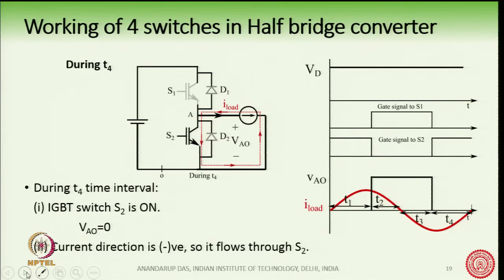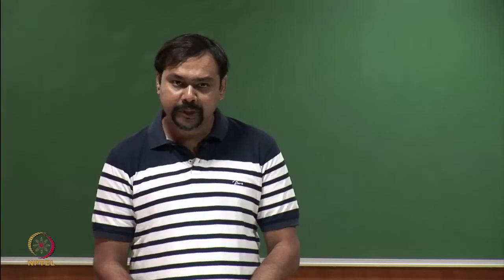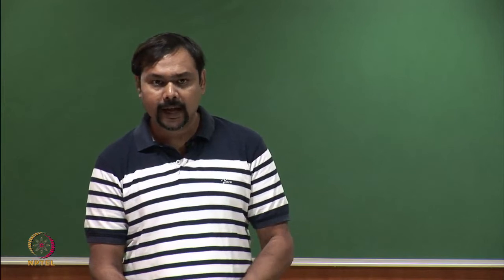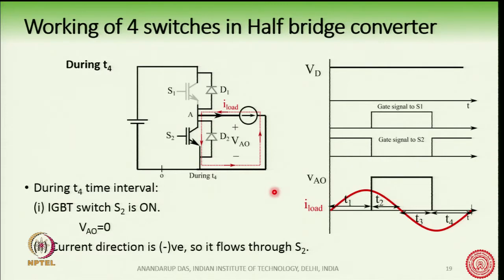Let us take the last case where the gate signal has been given to switch S2 while the current is flowing negative. In this case, switch S2 is conducting. So we have analyzed the four switches of the half bridge converter and when they will be conducting at different time instants. In summary, the voltage VAO produced by the half bridge converter is unidirectional in nature, while the current can be bidirectional in nature.